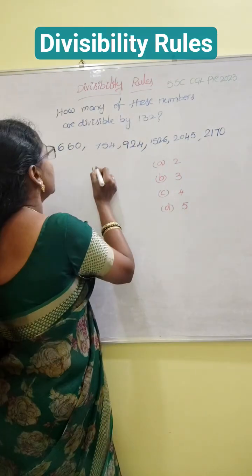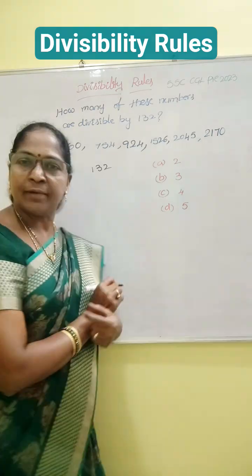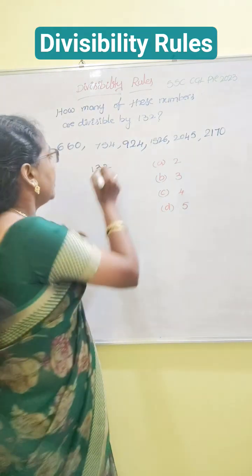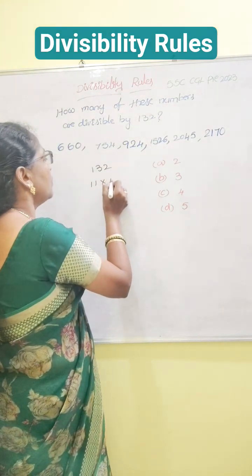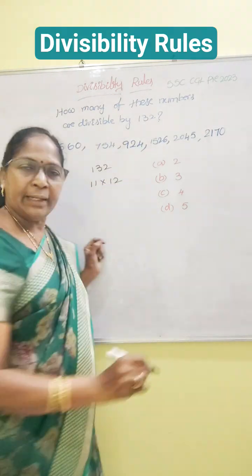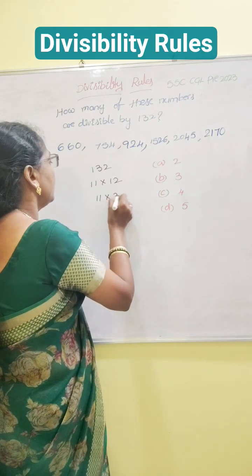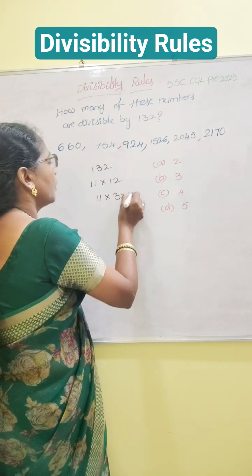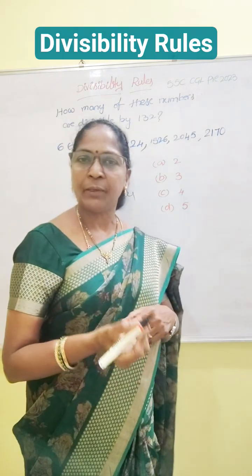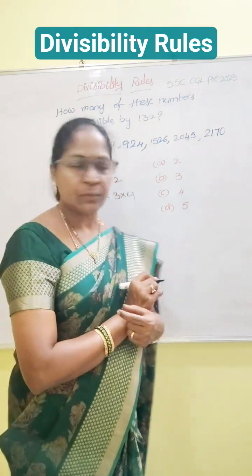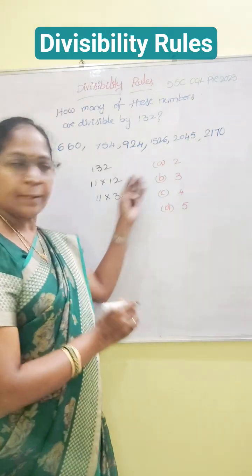132 — just split it into a product of factors. 132 can be written as 11 into 12. Again, 12 can be written as 11 into 3 into 4. Because from 2 to 11, we know the divisibility rules. Now, one by one you have to check it.